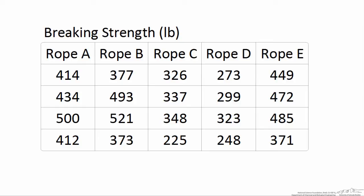Each rope was tested four different times to determine its breaking strength. We want to use MATLAB and an analysis of variance to figure out if the mean breaking strength from any of the five ropes differs.